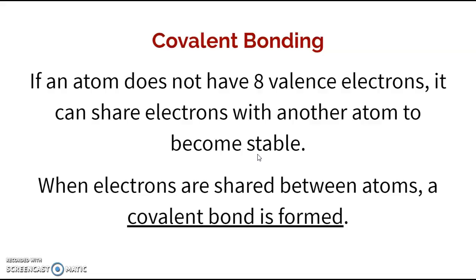In terms of covalent bonding, this happens when an atom doesn't have eight valence electrons, and in order to get eight, it shares electrons with another atom. So when electrons are shared between two different atoms, a covalent bond is formed between them.